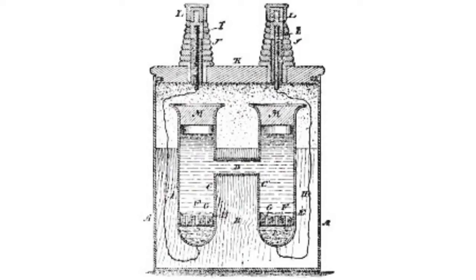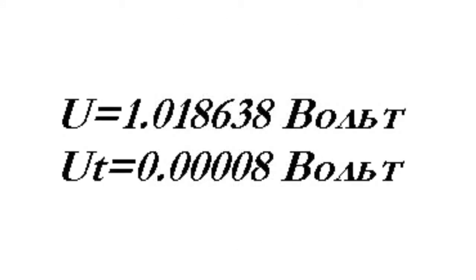The cell consists of two joint vessels, one of which contains a pure mercury cathode and the other an amalgam of cadmium anode. Cadmium sulfate (CdSO₄) is used as the electrolyte.